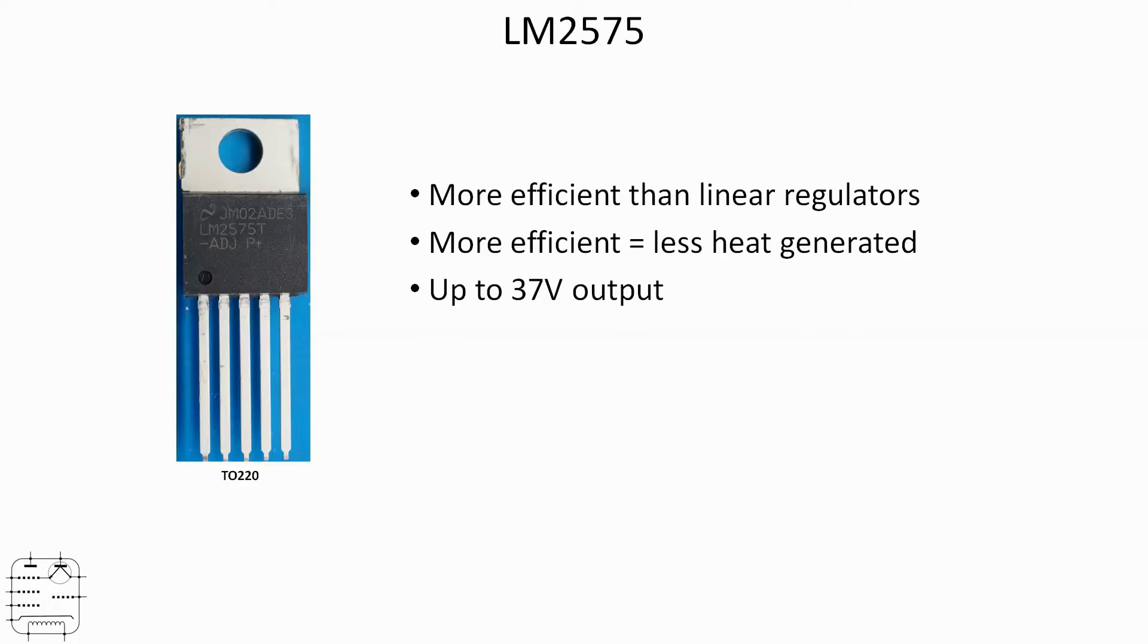Up to 37 volts output, and up to 40 volts input. Now those two figures are pretty much the same as the LM317, which is an adjustable linear regulator. However, of course, the two points at the top will apply to the linear regulator. This is more efficient than that, and obviously we generate less heat. And the 2575 has thermal and current limit protection.